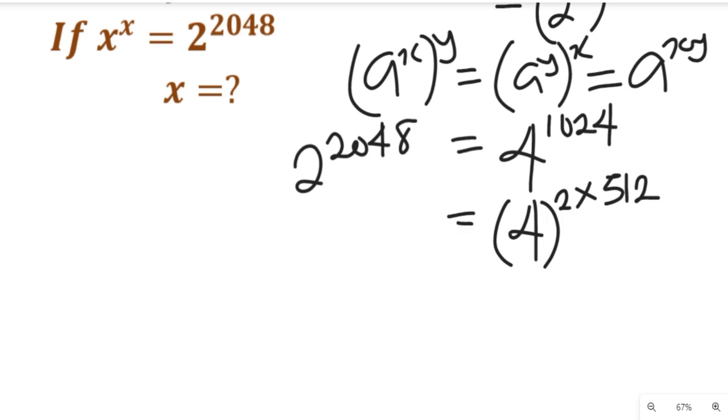And this simply can give us 4 to the power of 2 all in bracket multiplied by 512. So that means 2 to the power of 2048 can still be equal to this.